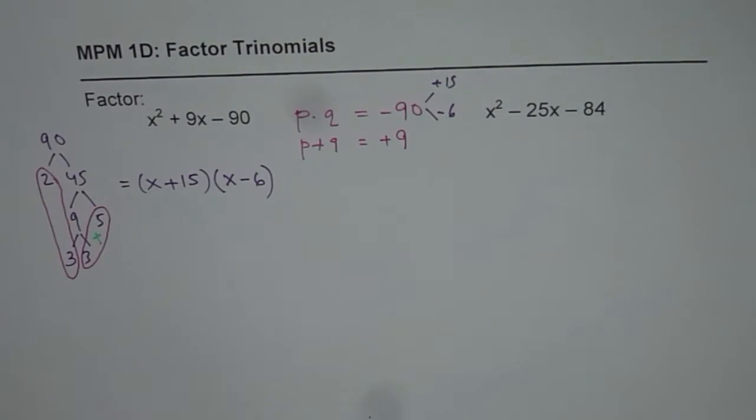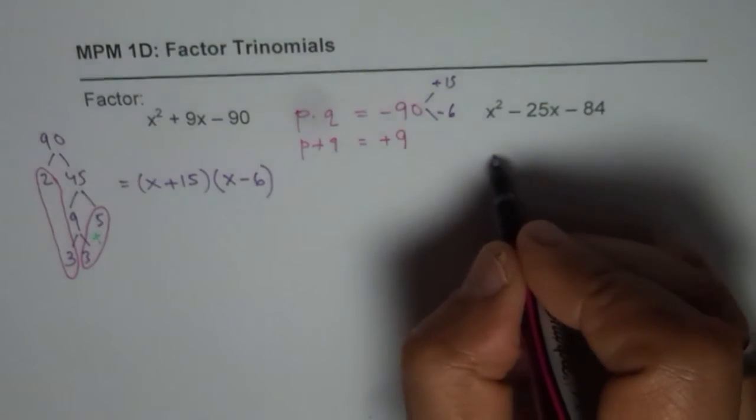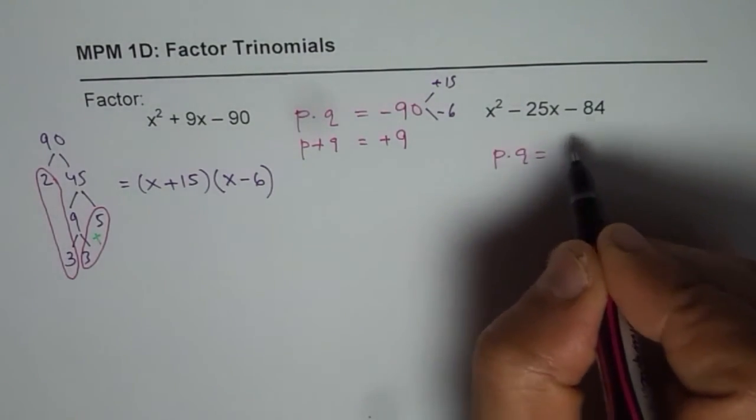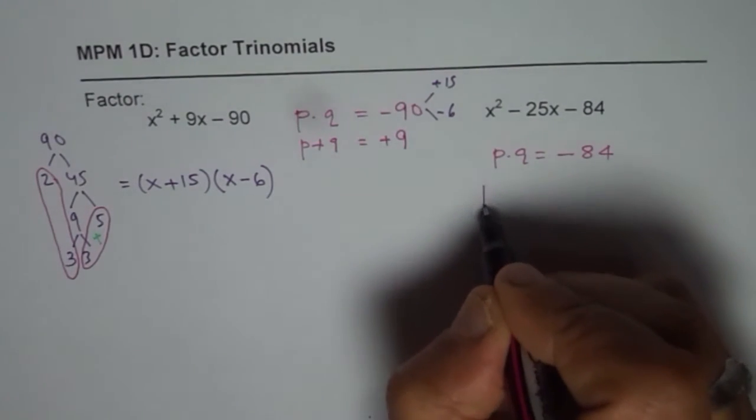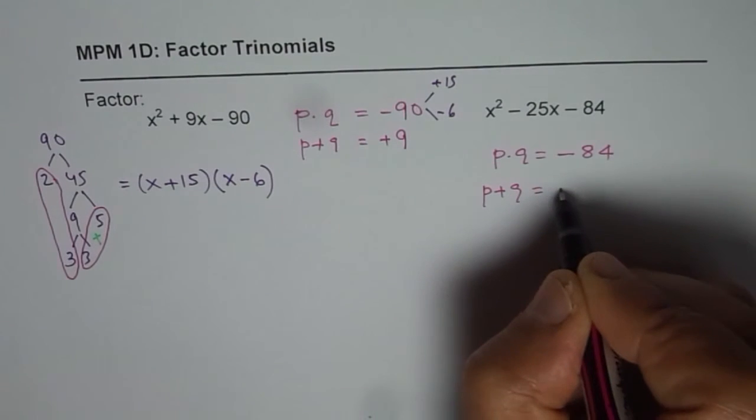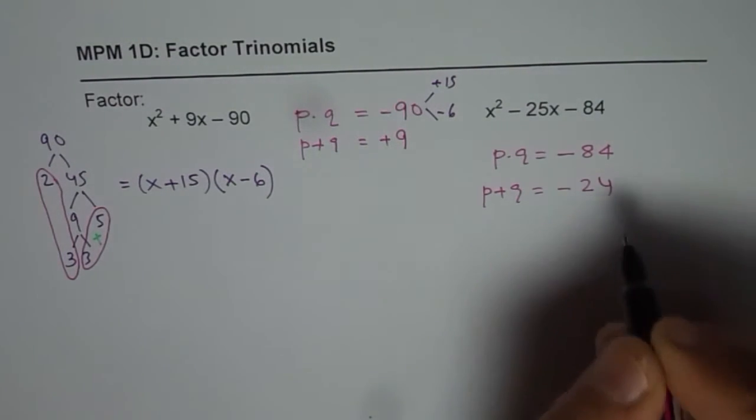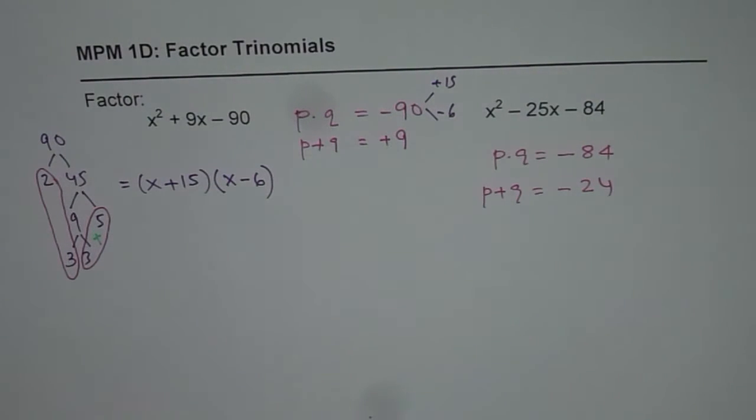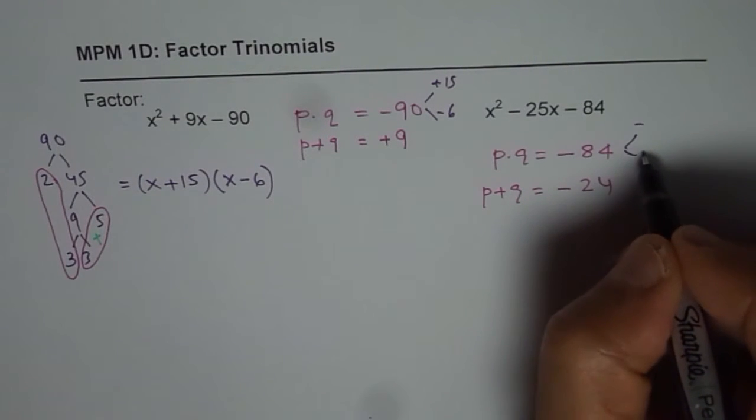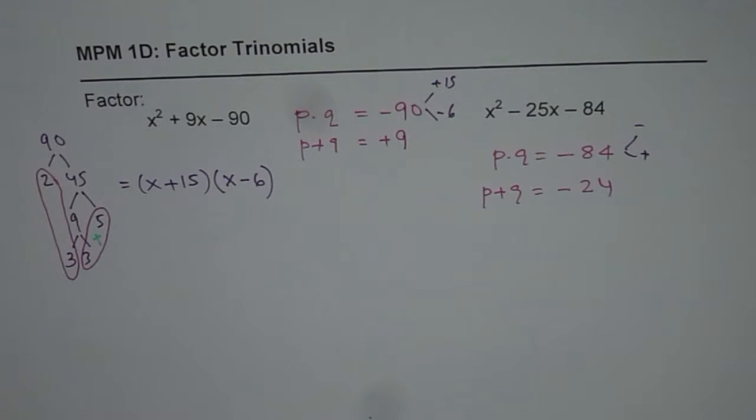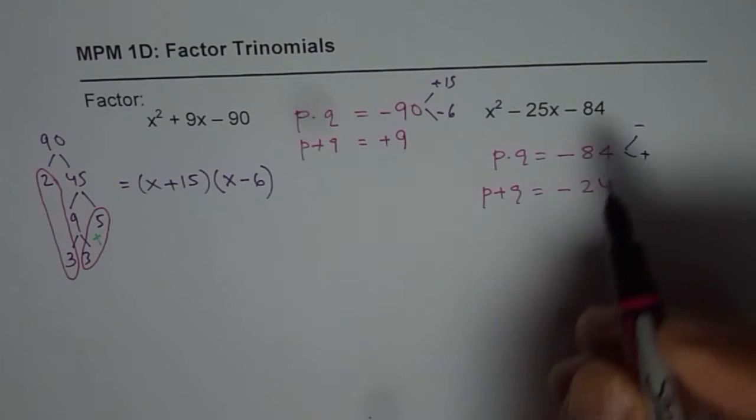Here we are looking for product. So let me write here itself. Product of these two numbers should be minus 84 again negative. But sum in this case is also negative. That means higher number is negative and lower number is positive.